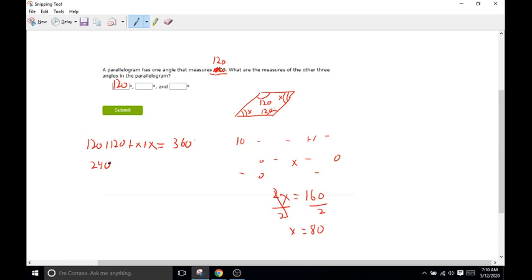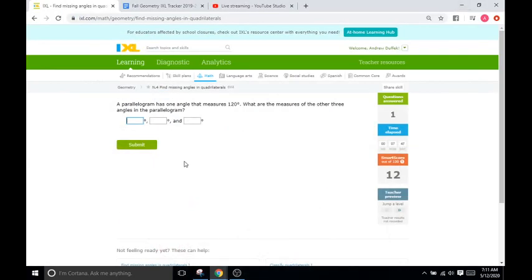So I'll do 120 plus 120 plus x plus x. And all of that is going to equal 360 degrees. Combined like terms, we have 240 plus 2x equals 360. Subtract 240 from both sides. So we are left with 2x equals 120 and dividing both sides by 2 gives us x equals 60. Which means these two angles are going to be 60. So our missing angles are 120, 60, and 60.